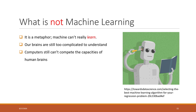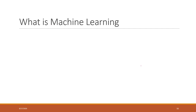Computers still cannot be as powerful as our brains, so they are simply following the instructions that we give them. So then what is machine learning? Machine learning is about extracting knowledge from data.